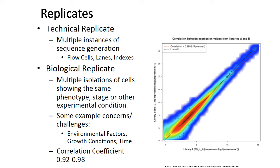Similarly, you could divide samples among multiple flow cells to determine how much variation there is between flow cells for the same sample. You'd also vary biological factors — for example, collecting both normal lung and tumor samples to measure variation due to normal versus tumor, and collecting samples from both males and females to see what gender-specific differences there are on gene expression measurements.